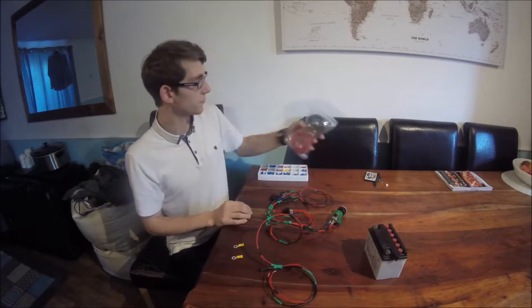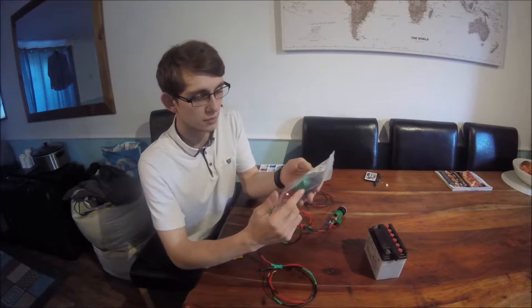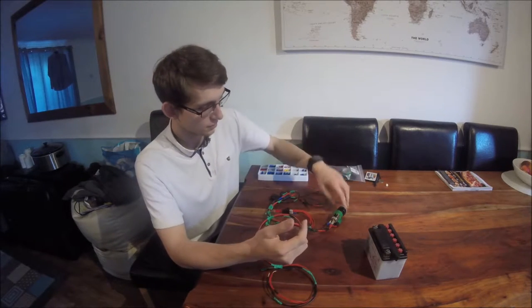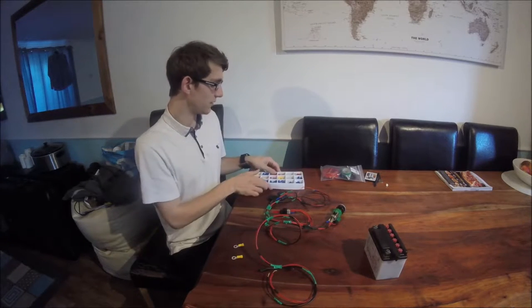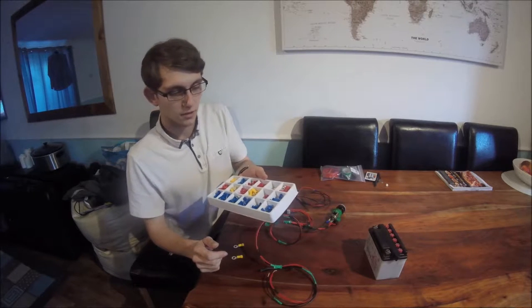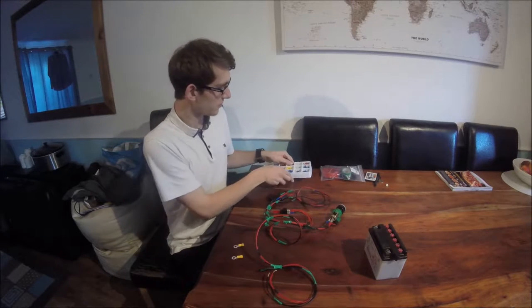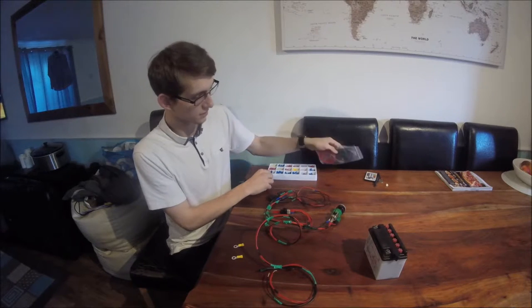So first off I use 0.2 gauge wiring. I just use black and red because the wiring on here was black and red. And then I've also got a set of crimp connectors which I got from Maplin and I've got some green and black tape.